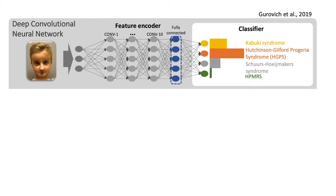With this slide I would like to explain the difference between a classification approach, which is Deepgestalt, and a clustering approach, which is Gestaltmatcher — the further development of the AI. The architecture of a deep convolutional neural network consists of an encoder and a classifier. An AI must first be trained with enough images to learn the facial gestalt of a disorder. For Deepgestalt, more than 20,000 cases were used to learn about 300 syndromes. The classifier, the final layer of the network, can only assess similarity to syndromes learned before. The minimum number of cases required to model a highly distinctive phenotype is seven. This means that disorders without enough image data have no support from the classification approach — which is the case for most ultra-rare disorders.